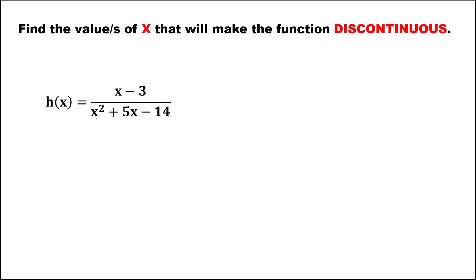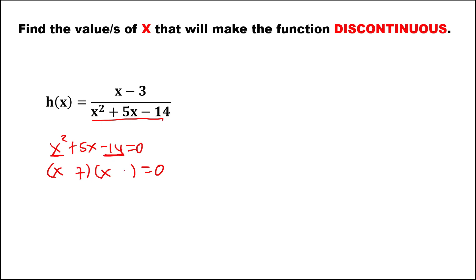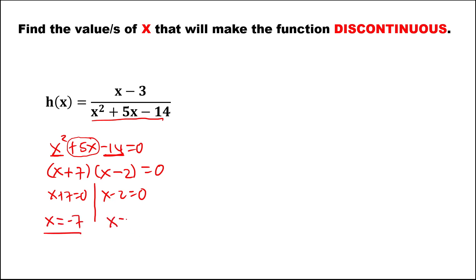For this fifth function, equate the denominator to 0. Since this is a quadratic equation, use factoring to solve for x. x squared factors as x times x, and negative 14 factors as 7 times 2. Since the middle term is positive, the bigger number is positive and the other is negative. Equating the two factors to 0 and solving gives x equals negative 7 and x equals positive 2. Therefore, the values of x that make this function discontinuous are x equals negative 7 and x equals positive 2.